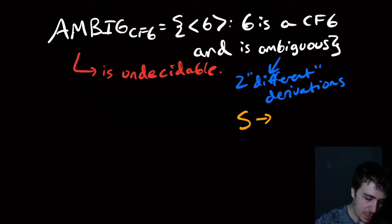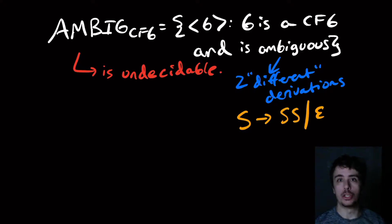As an example, if I have this grammar right here, there are two different derivations of the empty string. Either I can go there directly, or I could go to this rule and have each of the S's go to empty. Those are two different leftmost derivations, and therefore this grammar is ambiguous.